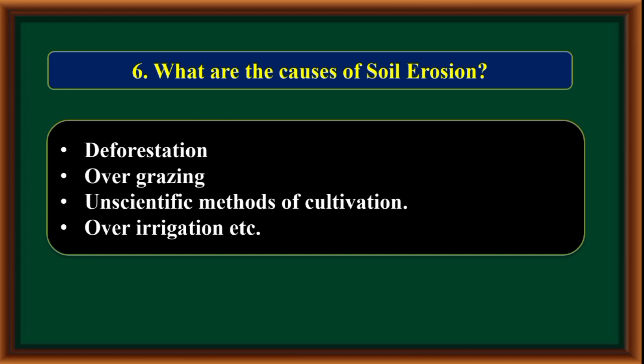What are the causes of soil erosion? Deforestation, overgrazing, unscientific methods of cultivation, and over-irrigation are the main causes of soil erosion.